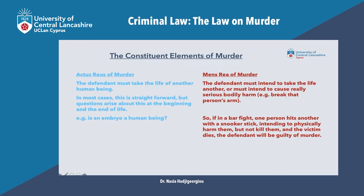The only difficulties with the actus reus of murder have to do with the beginning of life cases — so embryos — and the end of life cases, so people who are in, for example, permanent deep comas. The law has stated that an embryo is not a human being, so if the defendant kills an embryo he is committing a crime but that crime is not murder. At the same time, the law has stated that people who are in permanent and deep comas are human beings.